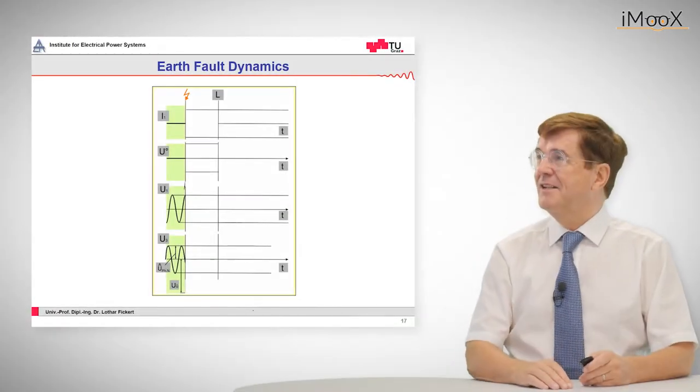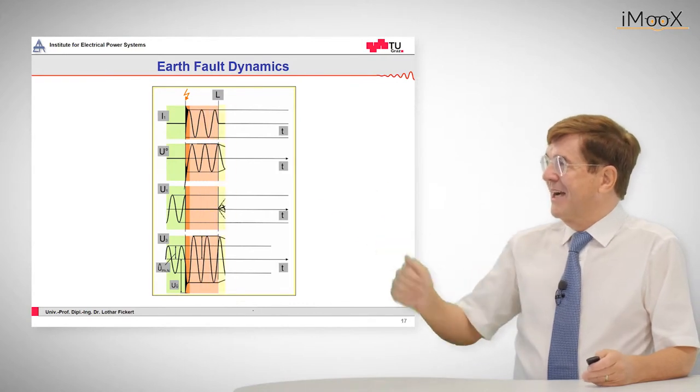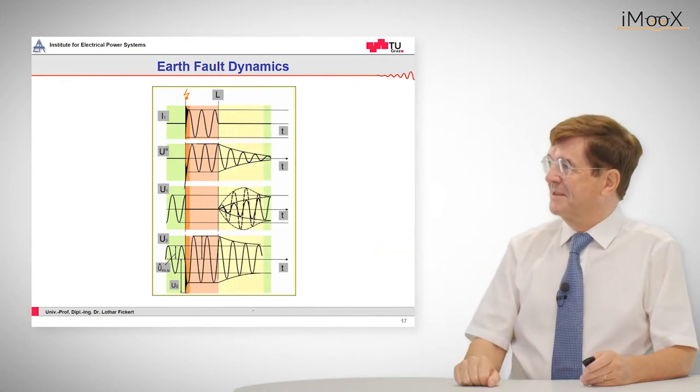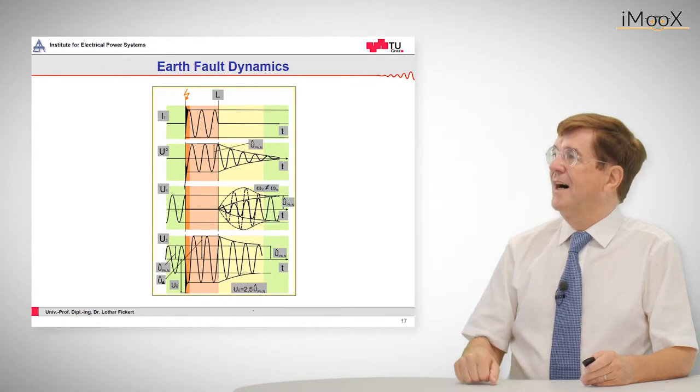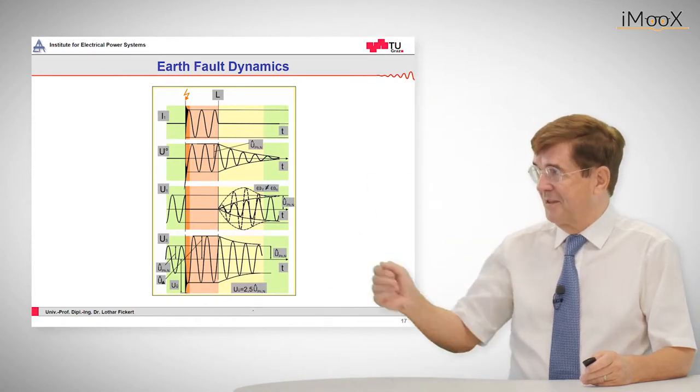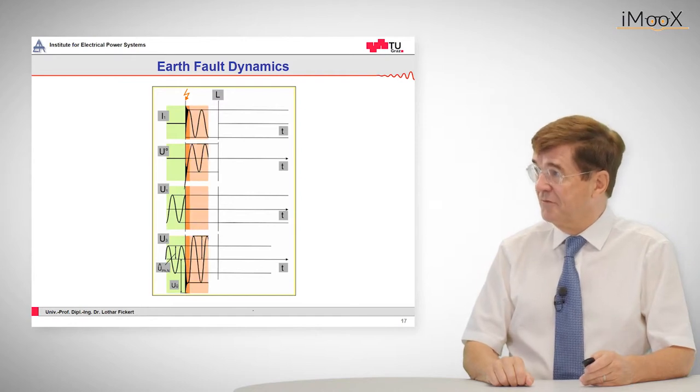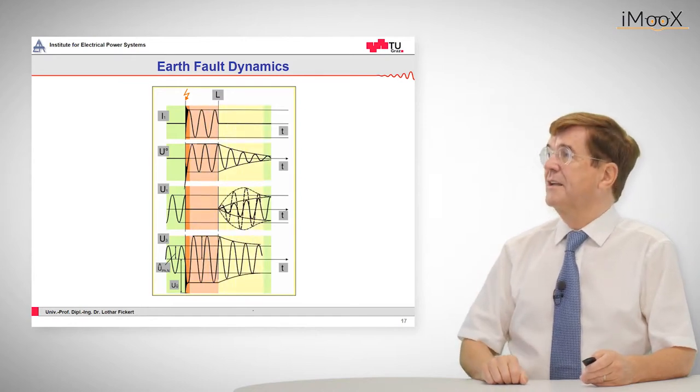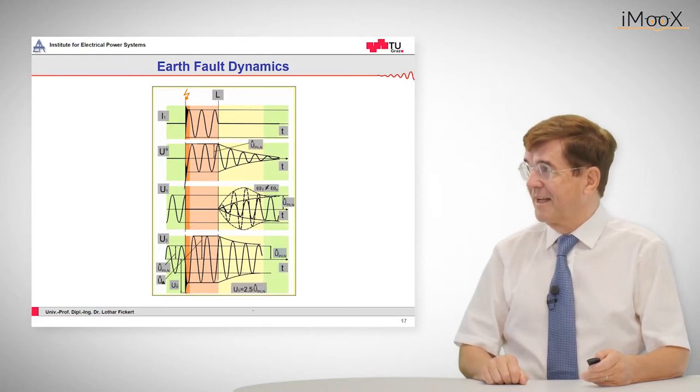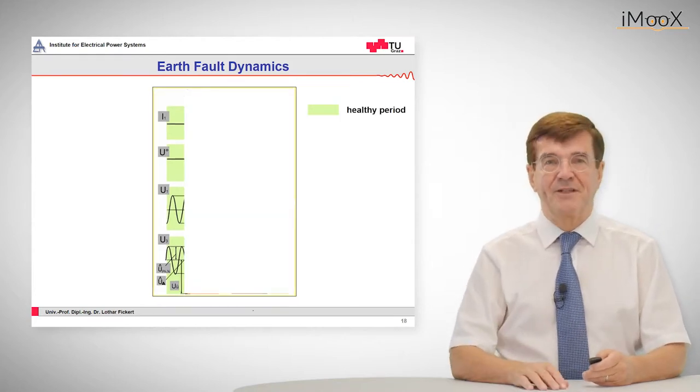Now let's see the earth fault dynamics in a time plot. So we see how the fault evolves. I let it repeat for the sake of repetition. So we have the onset, the persisting fault stationary and the switching off, and again the stable status. And now we will analyze this in greater detail.